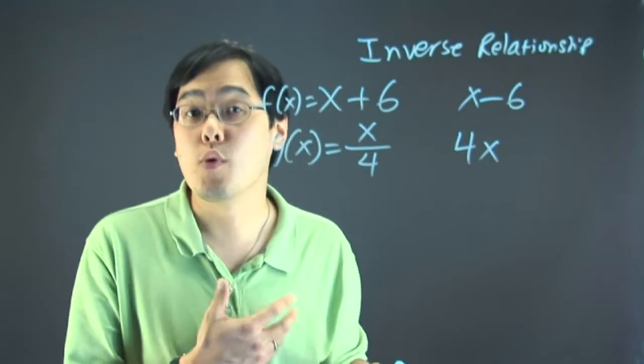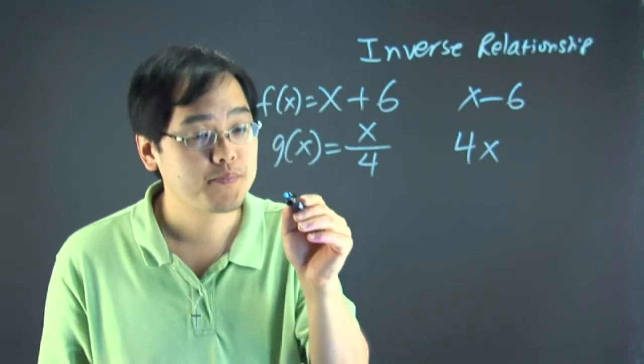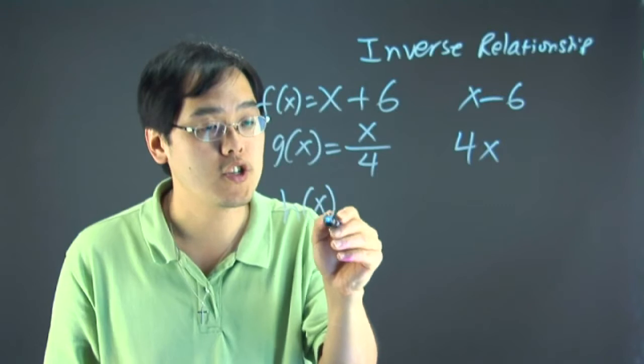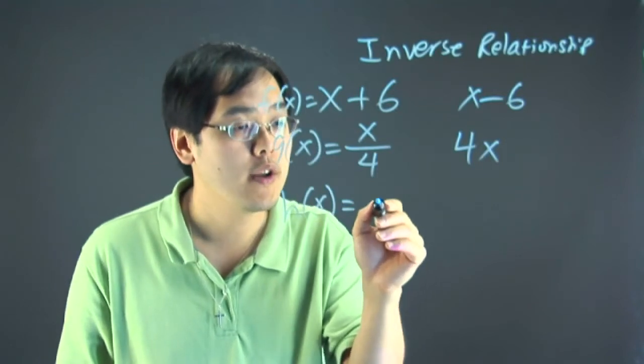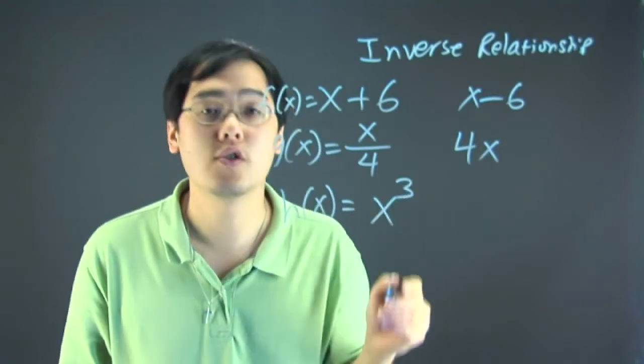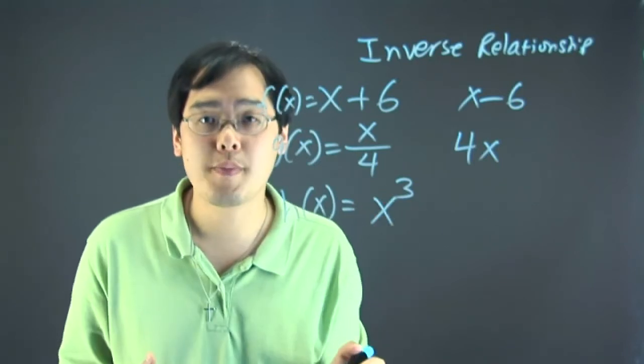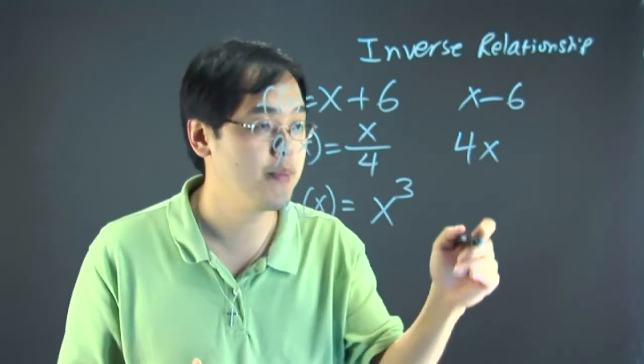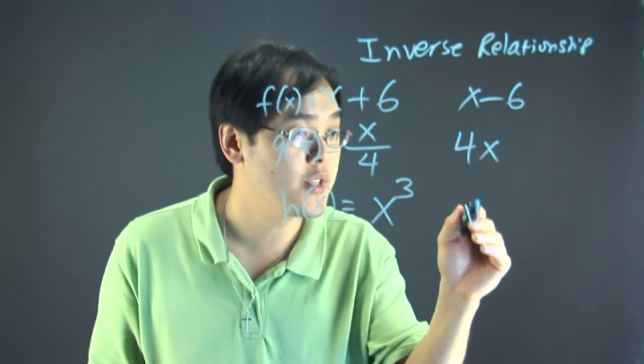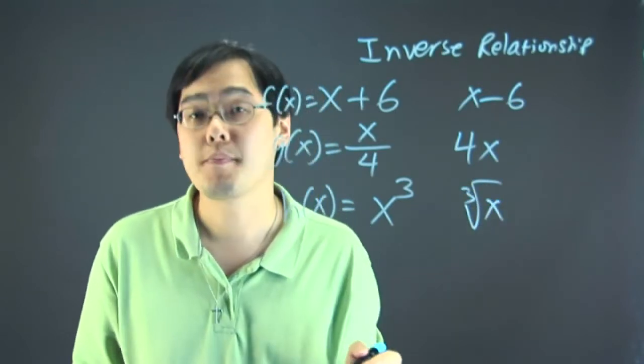Now, it does get more involved if you have a function where you're taking something and cubing it. Raising something to the third power in terms of the inverse relationship would mean doing the opposite of that, which means taking the cube root of it.